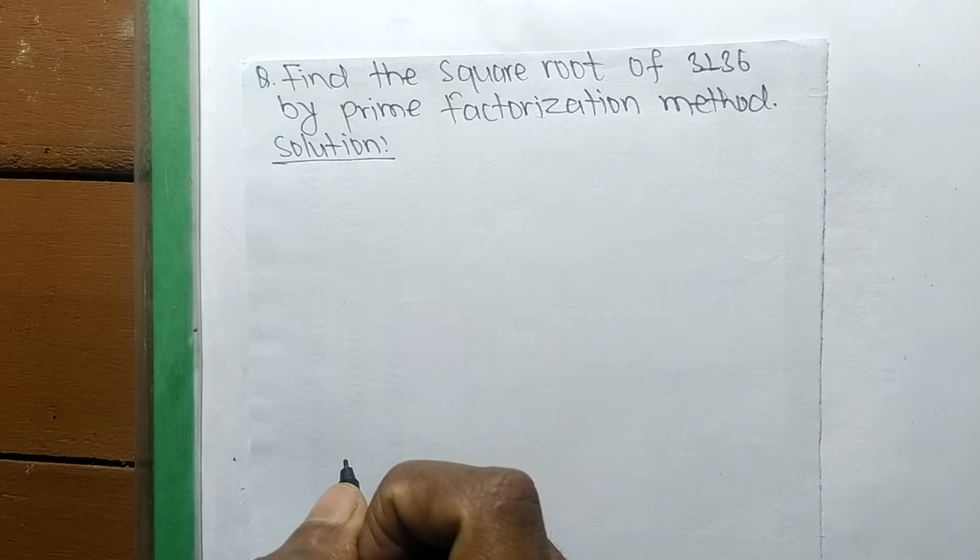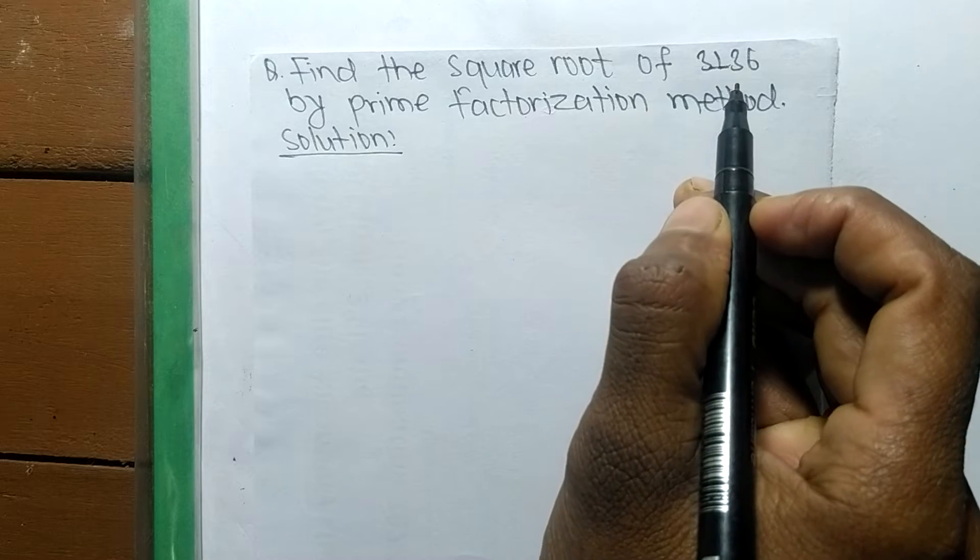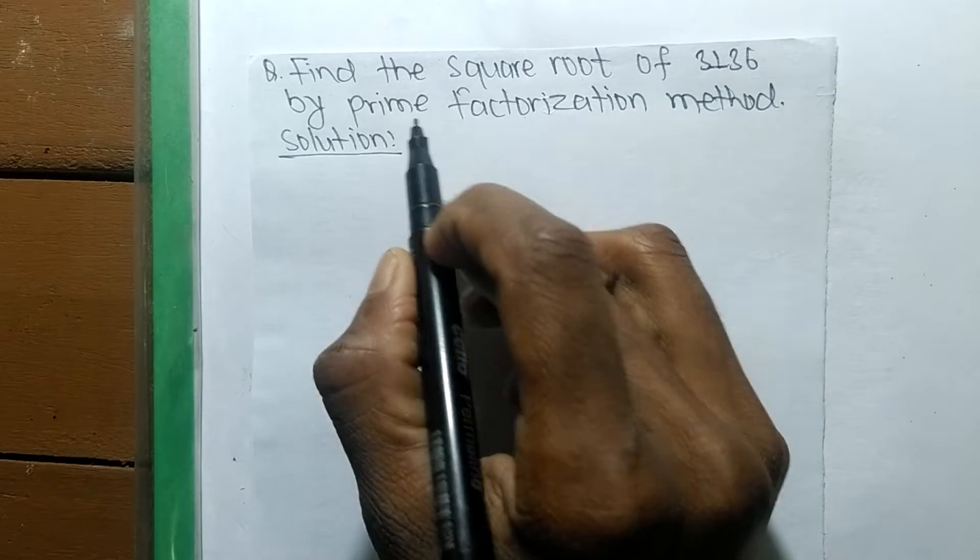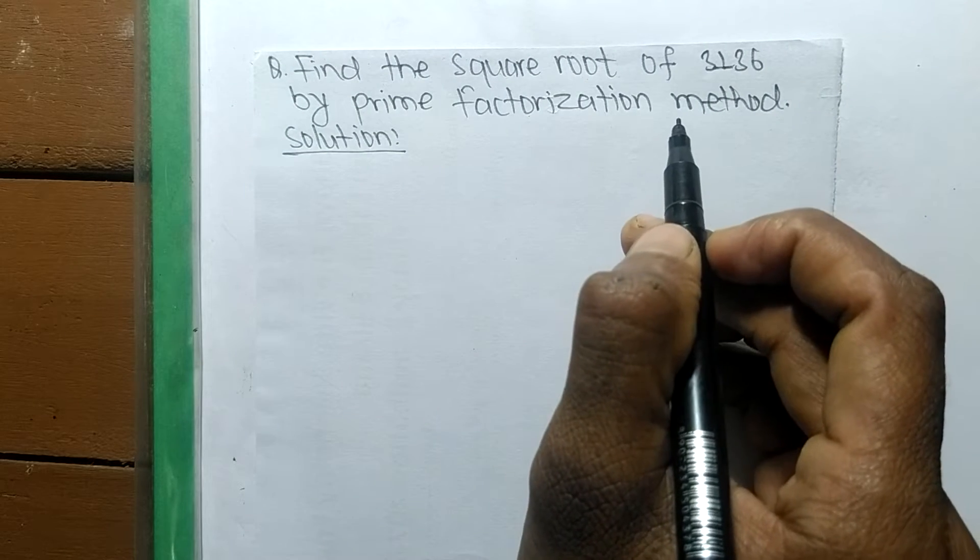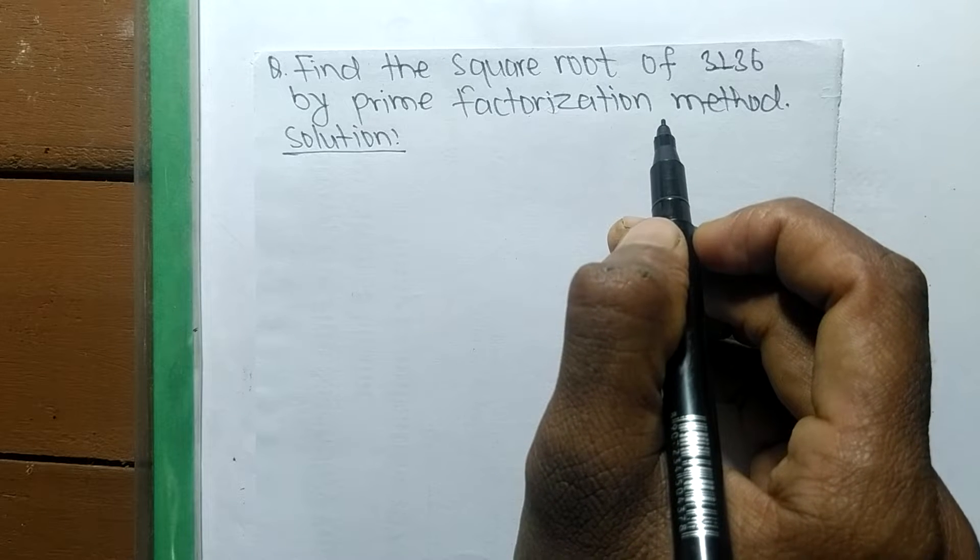Today in this video we shall learn to find the square root of 3136 by prime factorization method. To find a square root by prime factorization method, first we have to find out the prime factors of the given number.